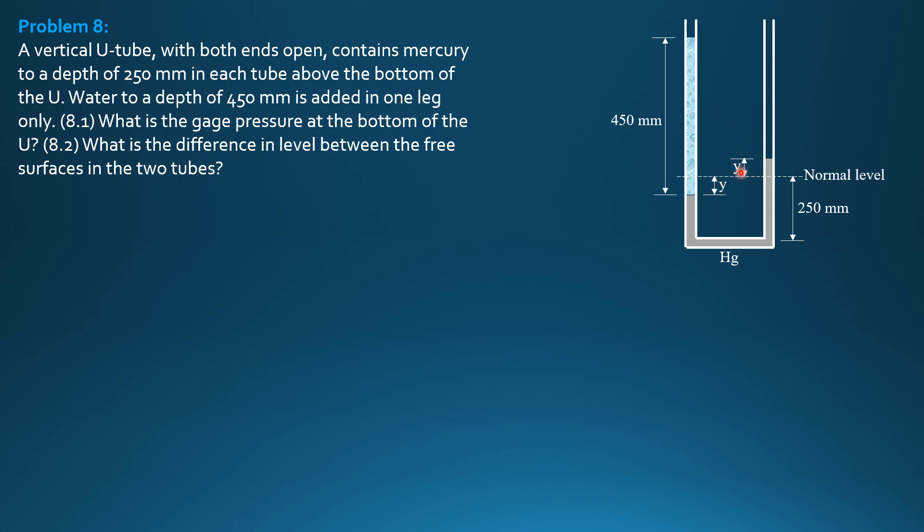So to determine Y, we sum a pressure from one point of known pressure, 0. We go down here, then we jump across, same pressure, and we rise by 2Y.